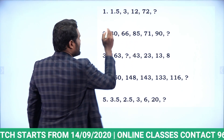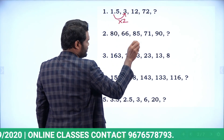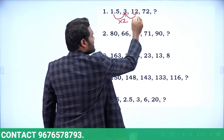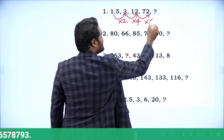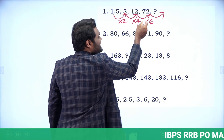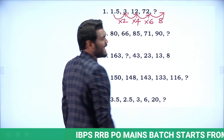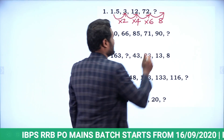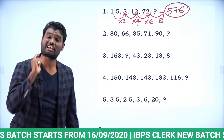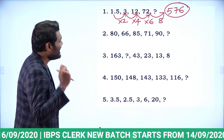Observing the pattern: 1.5 × 2 = 3, then 3 × 4 = 12, then 12 × 6 = 72. The multipliers are 2, 4, 6 — even numbers — so the next multiplier should be 8. Therefore 72 × 8 = 576. The answer for the first question is 576.